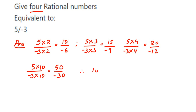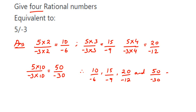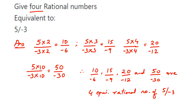Therefore, to conclude: 10 upon minus 6, 15 upon minus 9, 20 upon minus 12, and 50 upon minus 30 are four equivalent rational numbers of 5 upon minus 3. I hope this question is clear. If you have any other question or doubt, you can drop a comment. Thank you so much for watching.